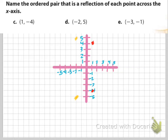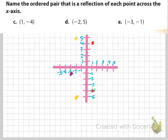Now using purple dots for the last one: negative 3 comma negative 1. So negative 3 to the left, down negative 1 — I'm right here. Reflecting across the x-axis, I go over negative 3 and this time up 1. And I see my reflection across the x-axis.